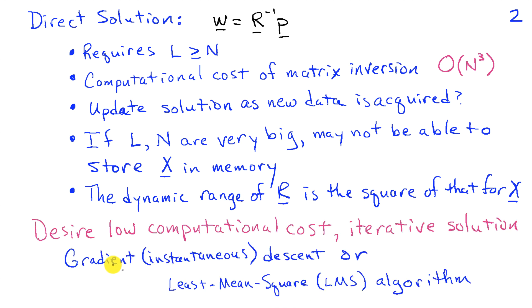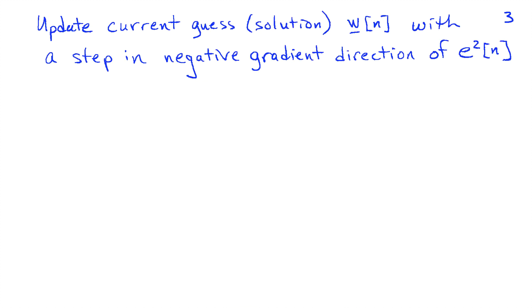What we'd really like is to have a low computational cost iterative solution to this problem that avoids some of these difficulties. We're going to take a gradient descent based on an instantaneous error, or the so-called least mean square algorithm approach in this lecture. The basic idea is that you update your current guess or your current solution, w, and we're going to add an index n here to indicate that this is the solution at instant n. We're going to update that by going downhill, so we're going to take a step in the negative gradient direction of the instantaneous error, e squared of n.